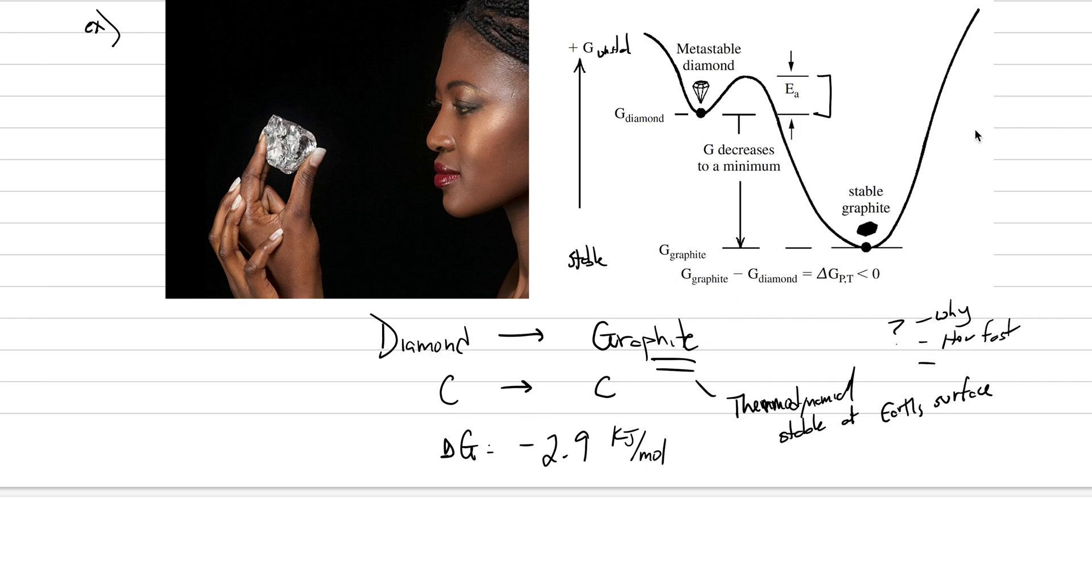And we show that pictorially up here, where here's our higher delta G, this would be our unstable, and here's our lower delta G, this would be stable at Earth's conditions. We see that graphite, and this line right here represents the topography of the Gibbs free energy. Here's our lowest Gibbs free energy. Graphite is the thing that should be stable. And diamond is not stable, but notice this is our interesting thing right here. EA stands for activation energy.